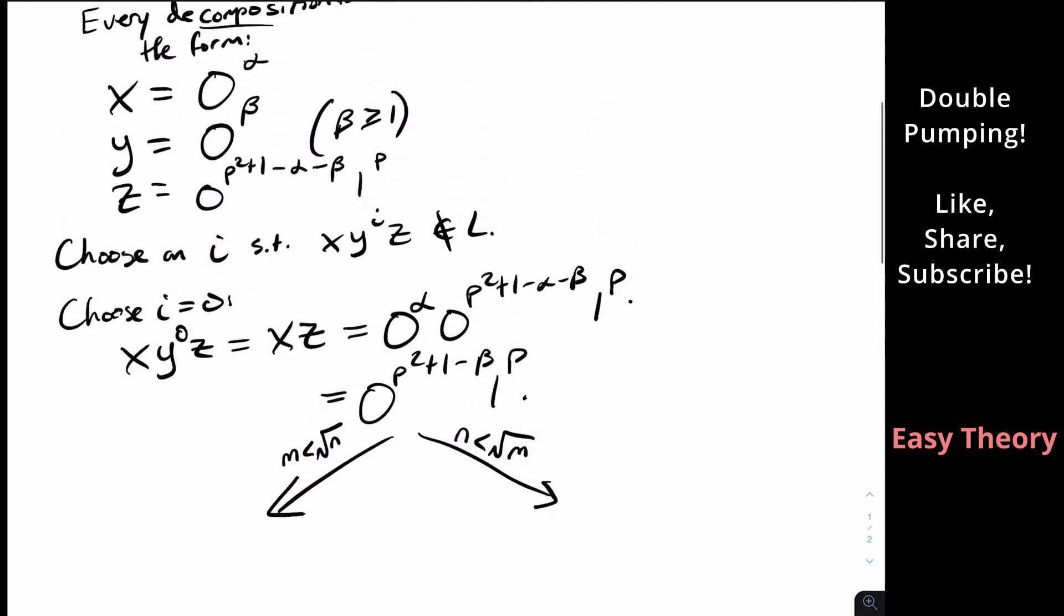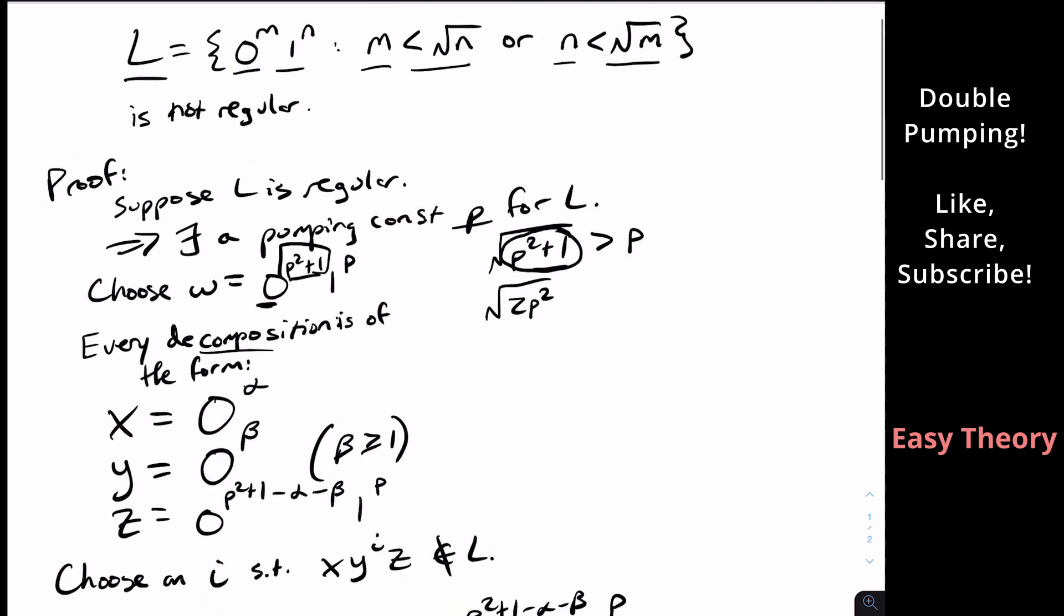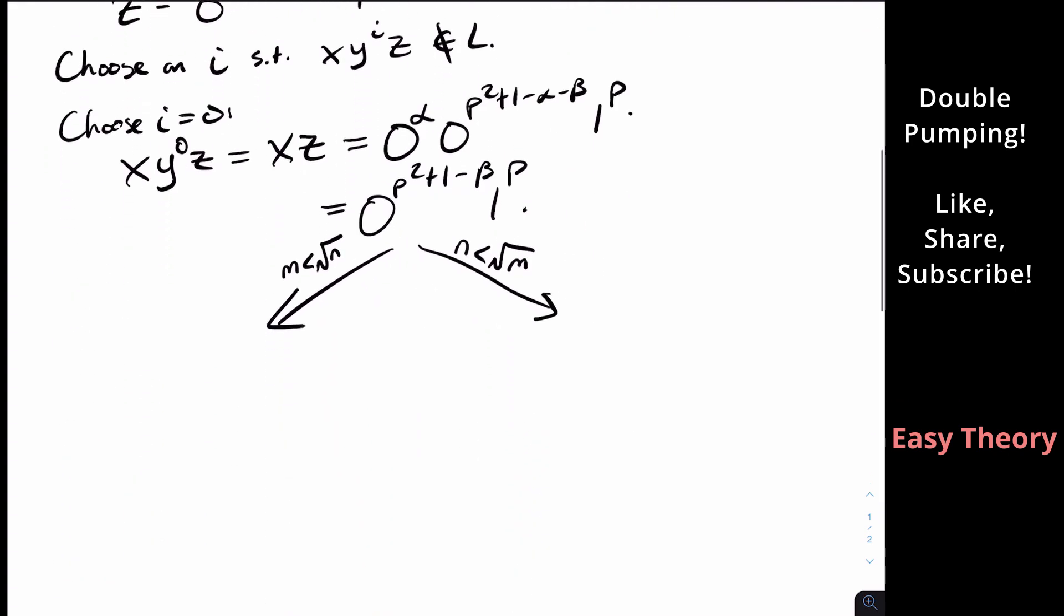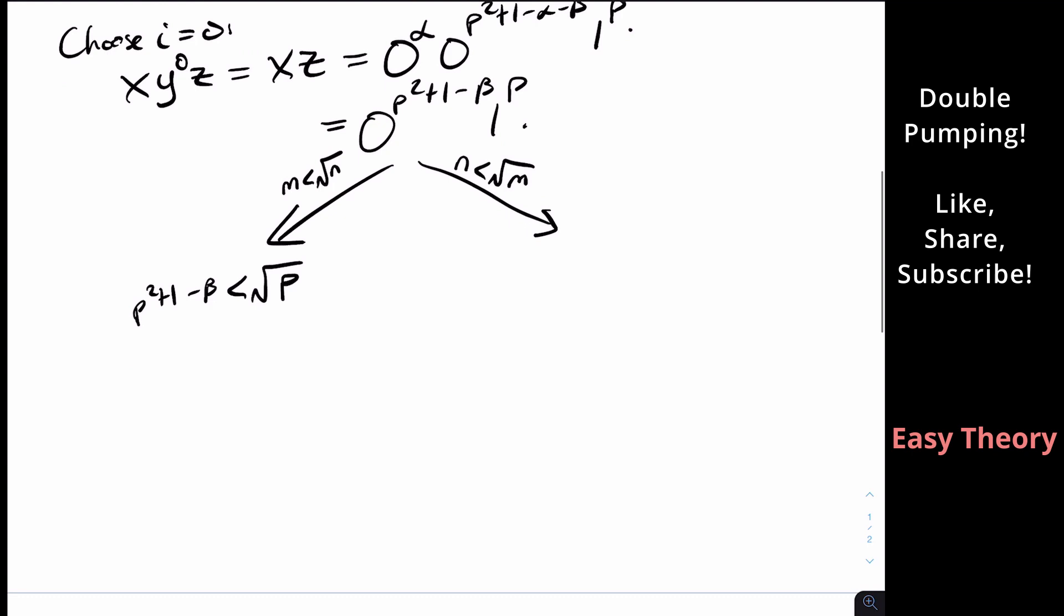that means that for m less than the square root of n, that's just the number of zeros versus the number of ones. So P, what we're saying here is that P squared plus one minus beta, which is the number of zeros that we have, is less than the square root of P. But this is clearly false,